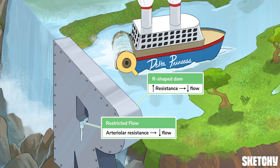This means that changing arteriolar resistance will change cardiovascular blood flow. But that's all we'll say about vascular resistance for now — check out the lesson on resistance and its impact on normal hemodynamics for a deep dive.